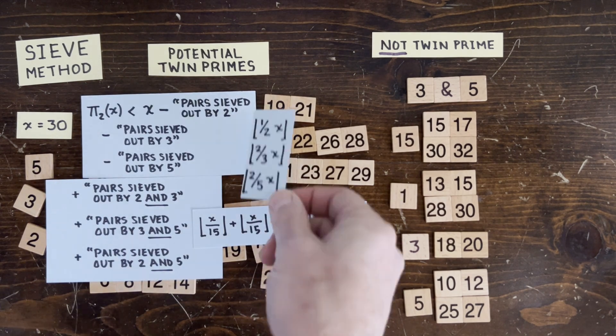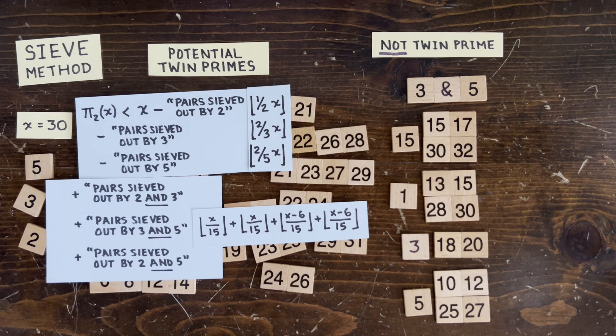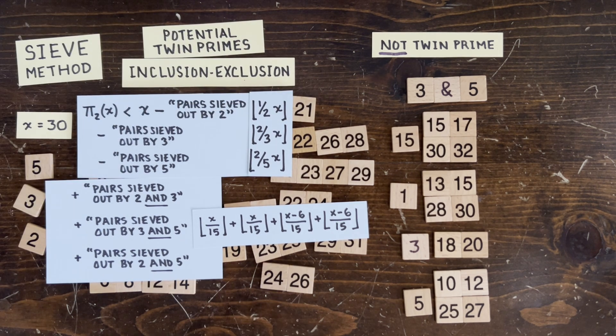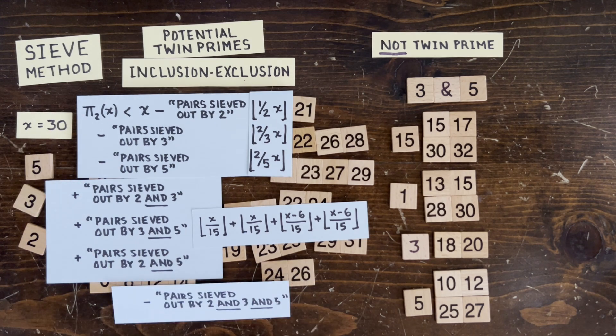So for every divisor of 15, we're going to pull out some number of pairs. And, you know, we're lucky that X was 30 here. If it was 40, it wouldn't divide evenly, and we have a lot of room for error. So anyway, we wind up with this for our upper bound on the number of twin primes.